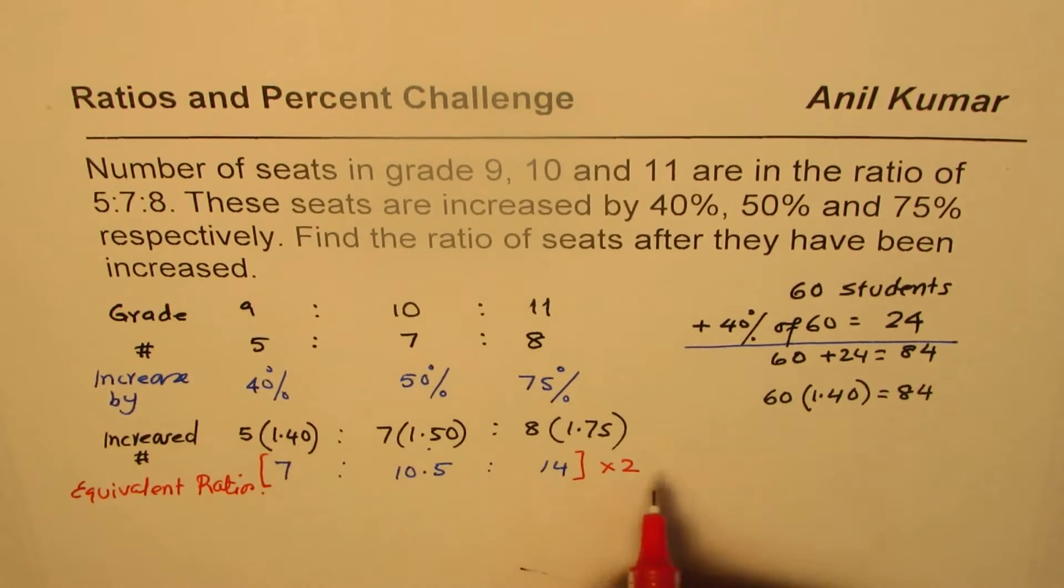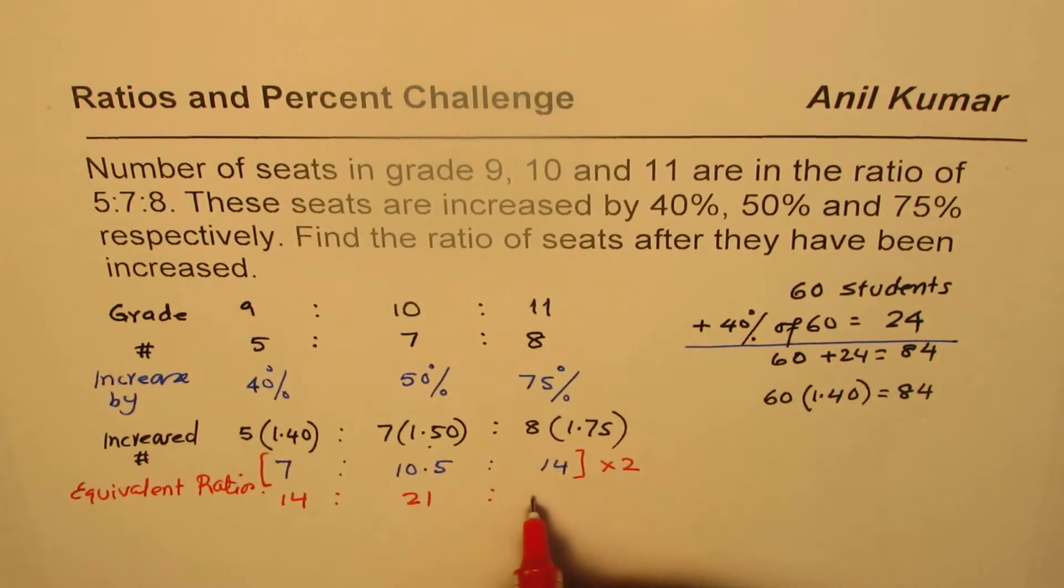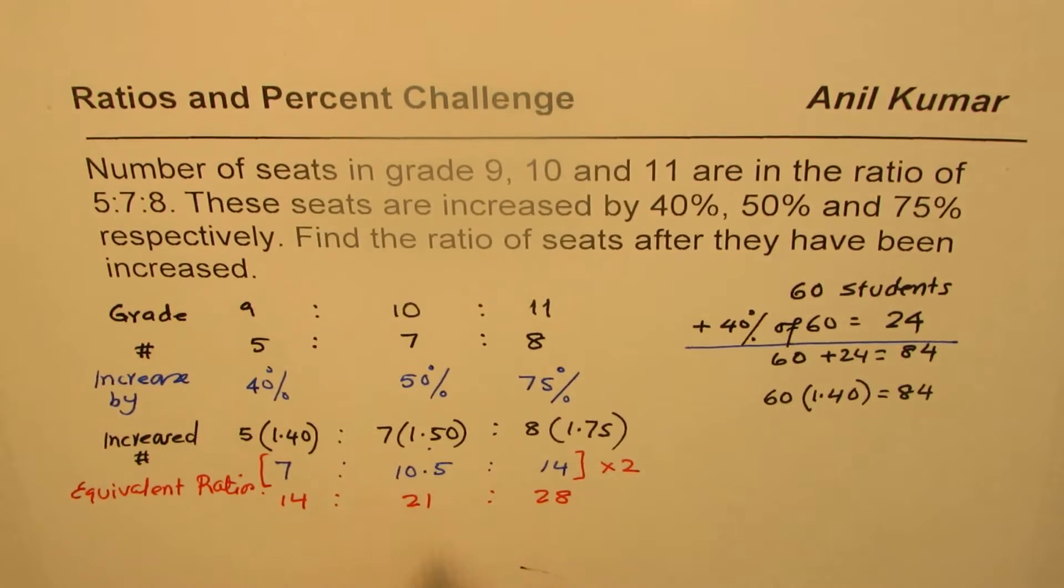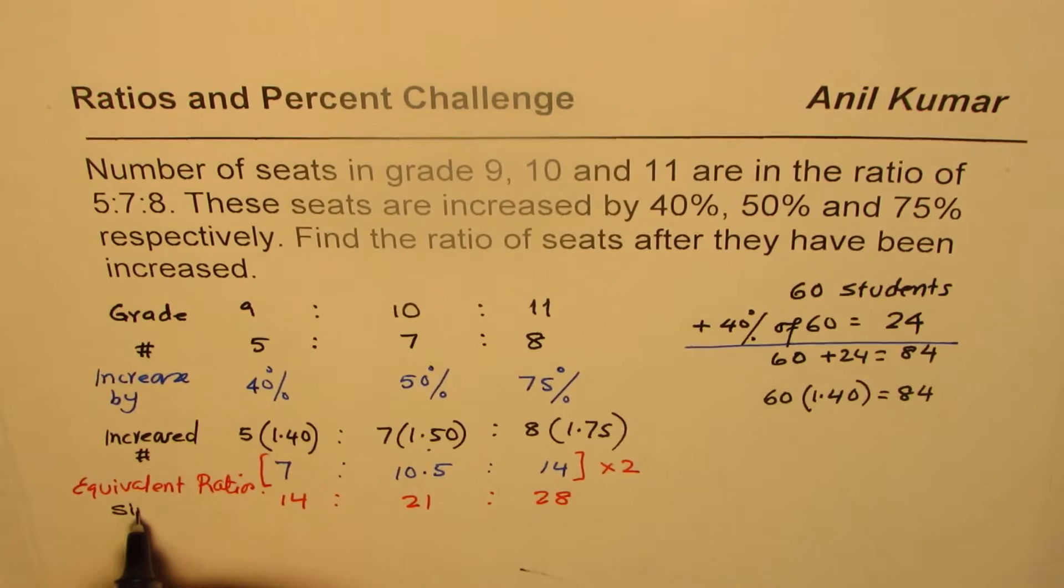So, that gives us 7 times 2 is 14. 10.5, 20 and 1, 21. And 14 times 2 is 28. So we get new ratio as 14 is to 21 is to 28. Now, can you simplify it? Yes, we can. Let us simplify this.